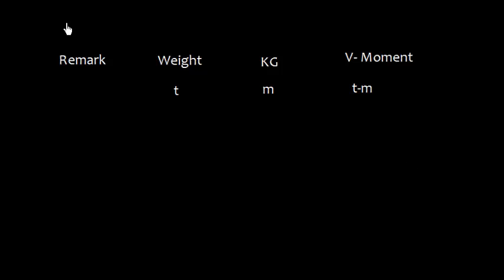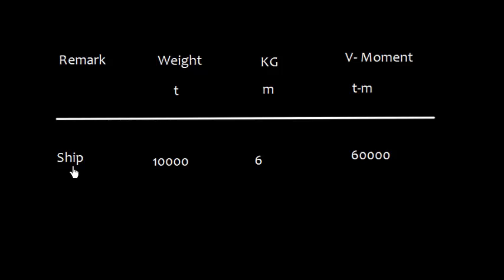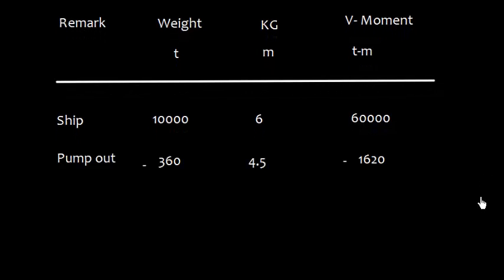The same problem can be solved by this moment table where this is remark, weight in tons, KG, the distance from keel in meter and vertical movement which is the product of weight and KG in ton meter. First we have the vessel which is ship, weight was 10,000 ton, KG of the ship was 6 meter. So, the product is 60,000.